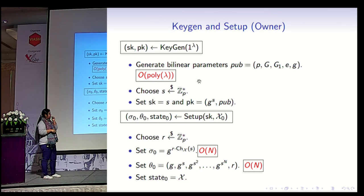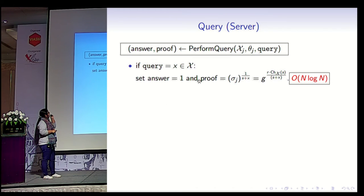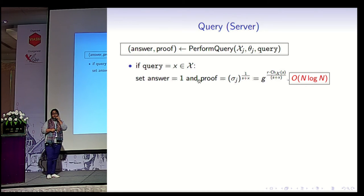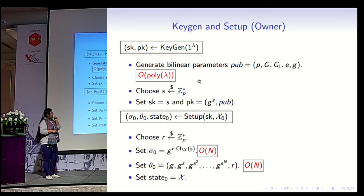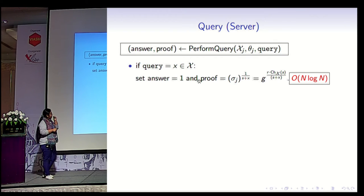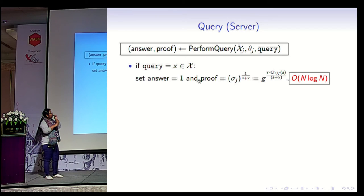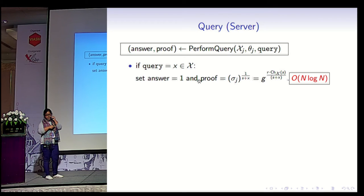For a query operation, run by the server, the server doesn't know the secret key but knows the string g^s up to g^(s^n). If the element is in the set, the answer is one, and the proof is sigma_j raised to 1/(s + x). Even though the server doesn't know s, because it knows the string g^s up to g^(s^n), it can evaluate this. The non-membership case is the more tricky part. If element x is not in the set, by definition the characteristic polynomial (z + x) and the characteristic polynomial of the set should be coprime — this is what we exploit to prove non-membership.